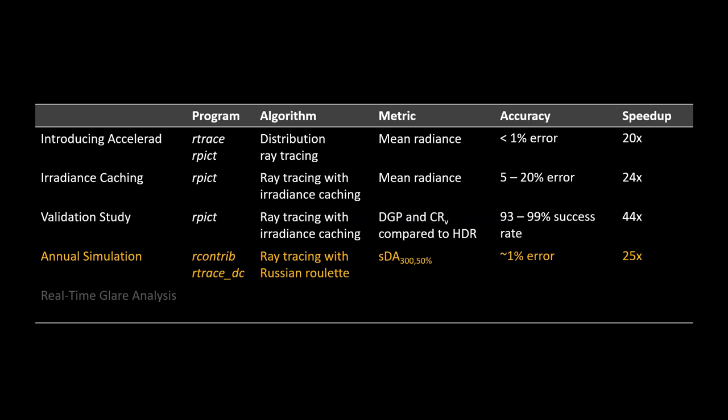In summary for annual simulations: using Russian roulette, speedups of around 25 times are achievable with less than 1% error. These are good speedups, but not yet interactive.